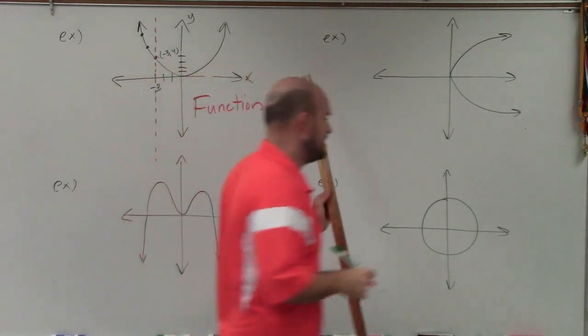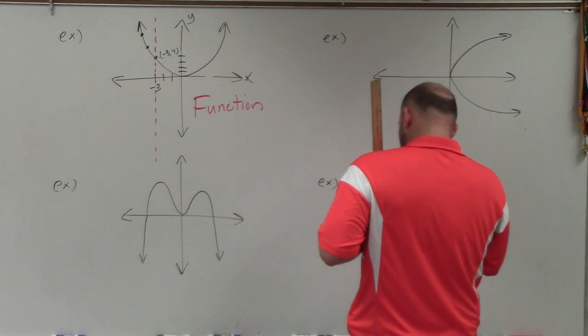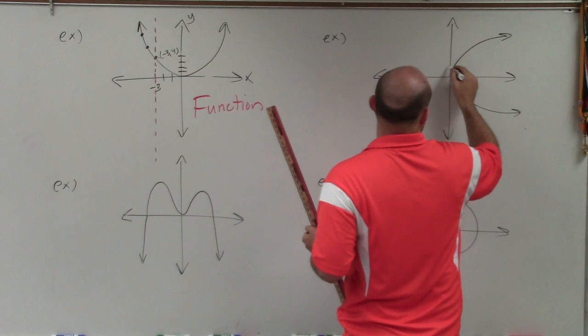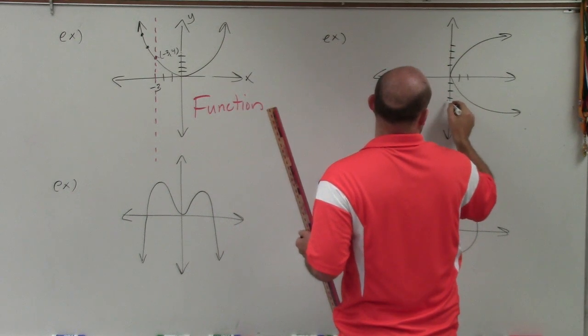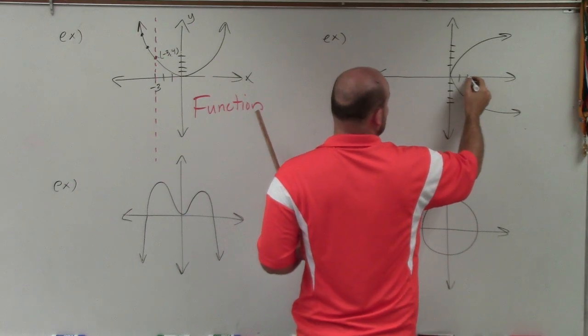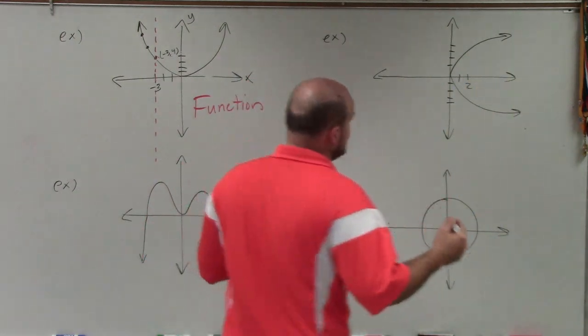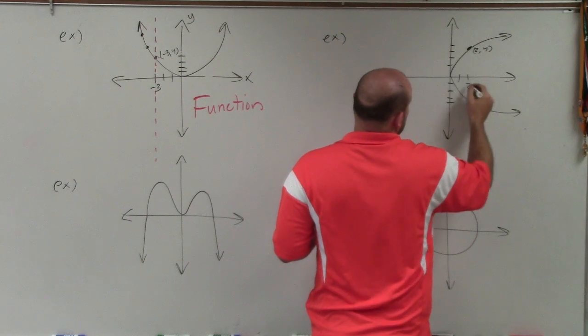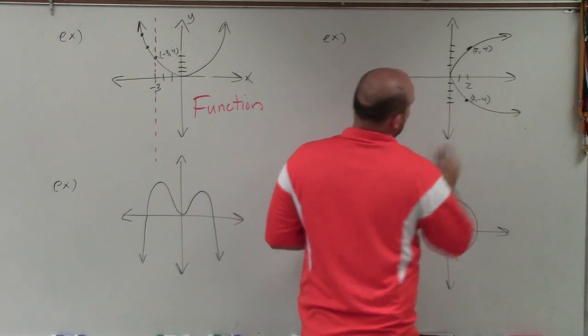Now let's do that again. If I was going to take the point 2 here, let's do 1, 2, 3, 4, 1, 2, 3, 4. So what points are on the graph when x equals 2? Well, there's two of them. We have 2 comma positive 4 and 2 comma negative 4.